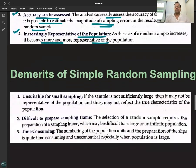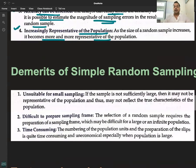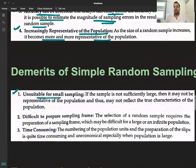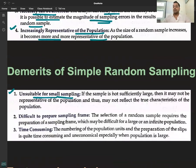Demerits of simple random sampling. Unsuitable for small sampling. If the sample is not sufficiently large, then it may not be representative of the population and thus may not reflect the true characteristics of the population.